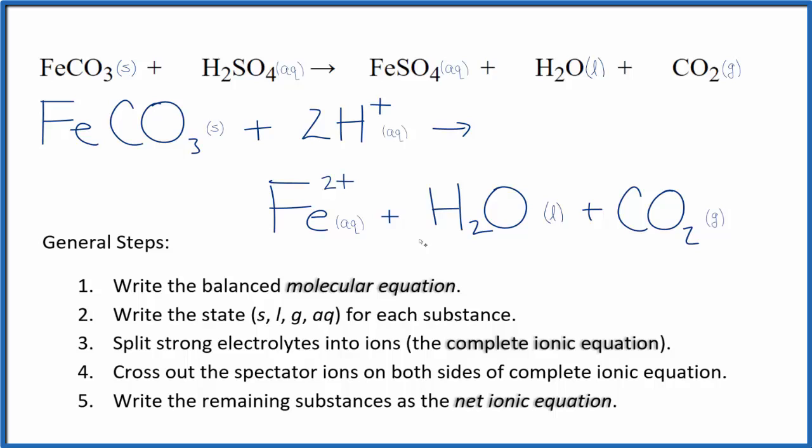So this is the balanced net ionic equation for this iron 2 carbonate and sulfuric acid. You'll note that charge is conserved. We have 2 times 1 plus, so 2 plus in the reactants. And then in the products here, we have the 2 plus. If you count the atoms up, they're balanced as well.